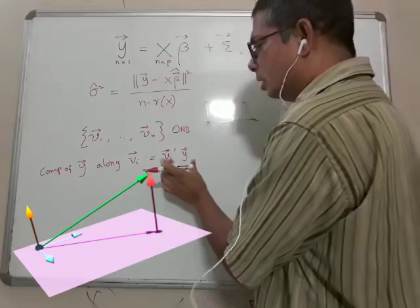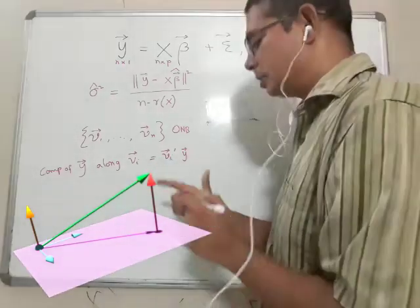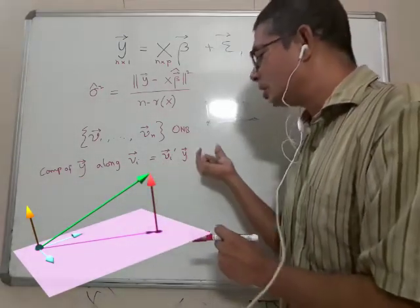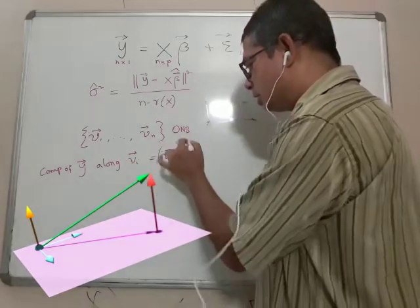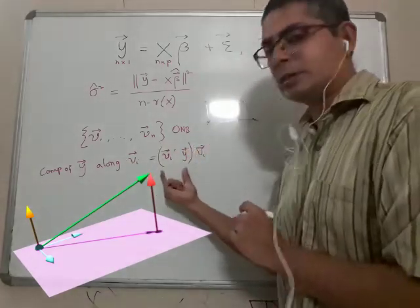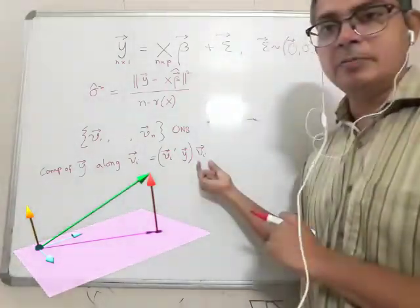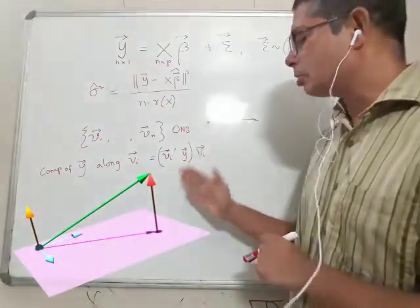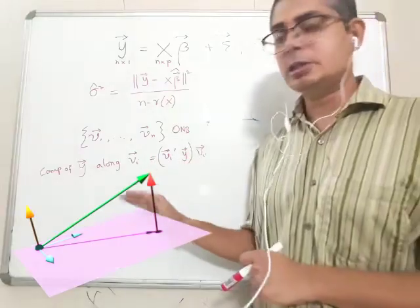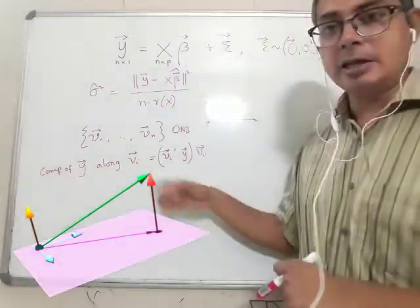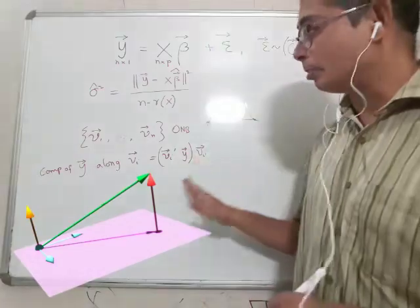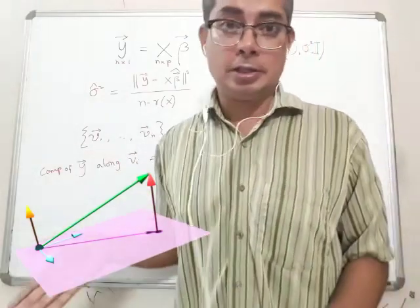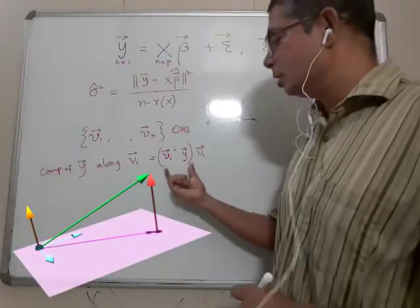To be precise, vi-transpose y is the scalar coefficient of the vi vector; the vector component along vi would be that scalar times vi. You just take the usual dot product — the inner product between y and vi, the direction along which you are projecting. This is a special property of orthonormal bases; it need not be true for other kinds of bases, which is one advantage of working with orthonormal bases.